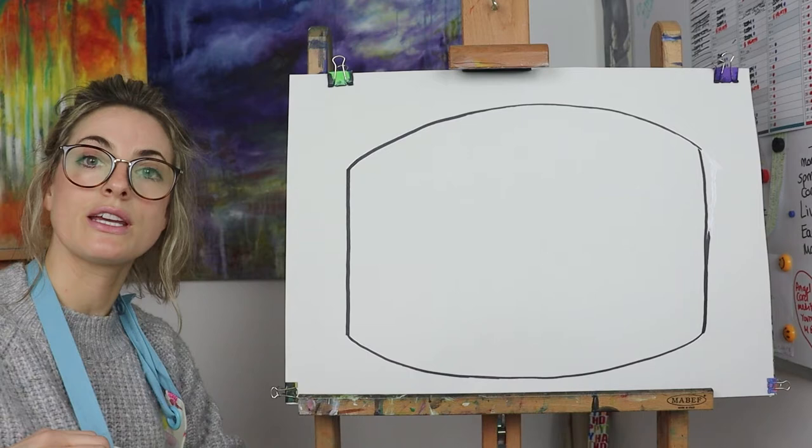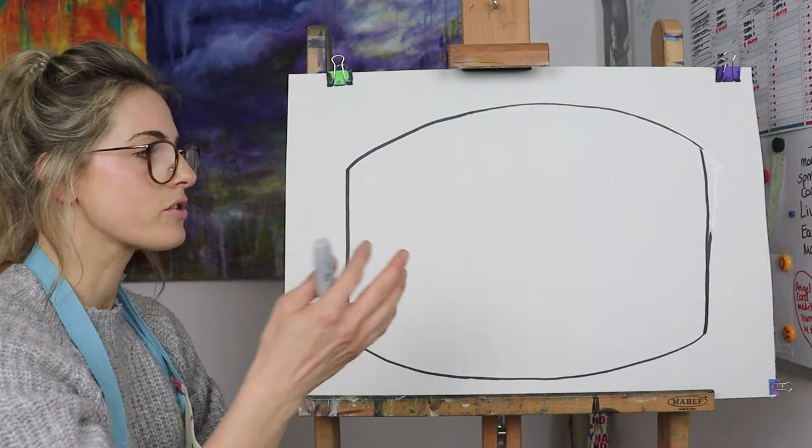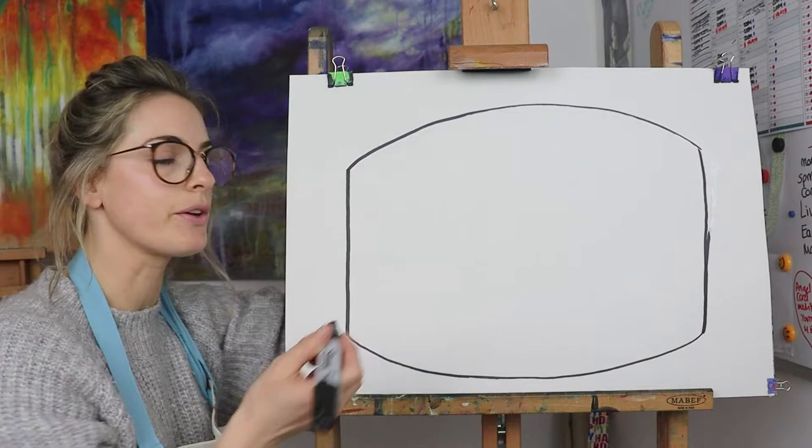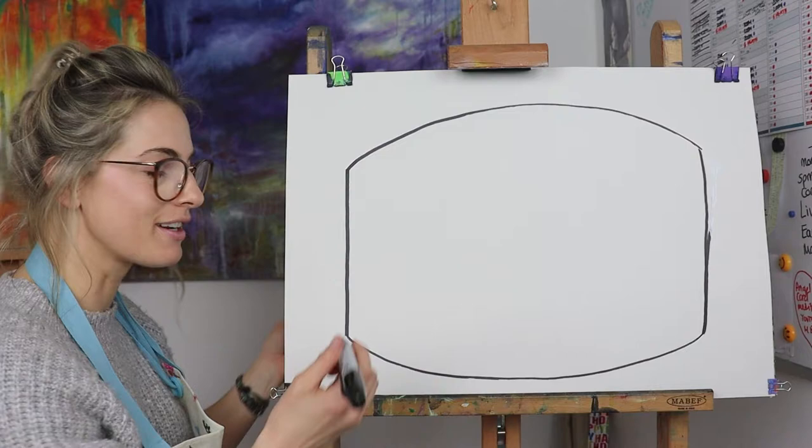Now we want to create the Colosseum. The one I'm going to draw isn't going to be the original intact one — it's going to be the crumbling one, which I think is a really nice thing to draw. It's a ruin, not fully formed as it was in Roman times. So we're going to do a line...